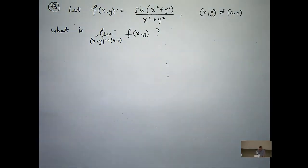If that limit exists as some number, we will choose that to be the value of f(0,0) so that the function's continuous.